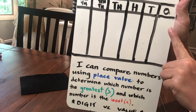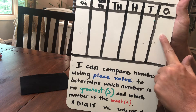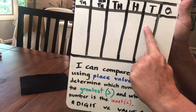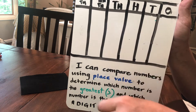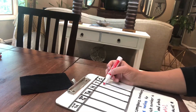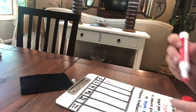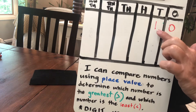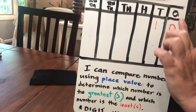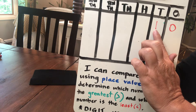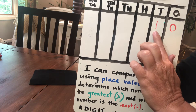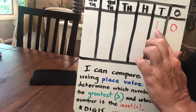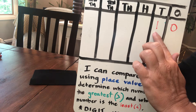For instance, if the number one is placed here in the ones column, that's equal to one. However, if I move that one here to the tens column instead and put a zero as a placeholder in the ones column, all of a sudden I have a completely different number. Just by moving the one one place to the left, it has increased its value ten times. Now this digit is worth ten — that's one bundle of ten.